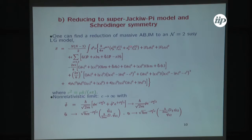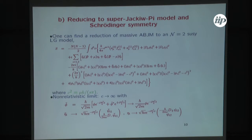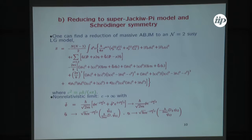One can reduce this massive N=6 supersymmetric version of the Landau-Ginzburg model — I've shown just the bosonic action, but I can generalize this to a supersymmetric one. The resulting action, written here for completeness, has besides these bosons also some fermions denoted by eta_i and eta-tilde_i, plus some Bose-Fermi interactions, besides the potential that was already written. Once you do that, you can take a non-relativistic limit on this field theory.